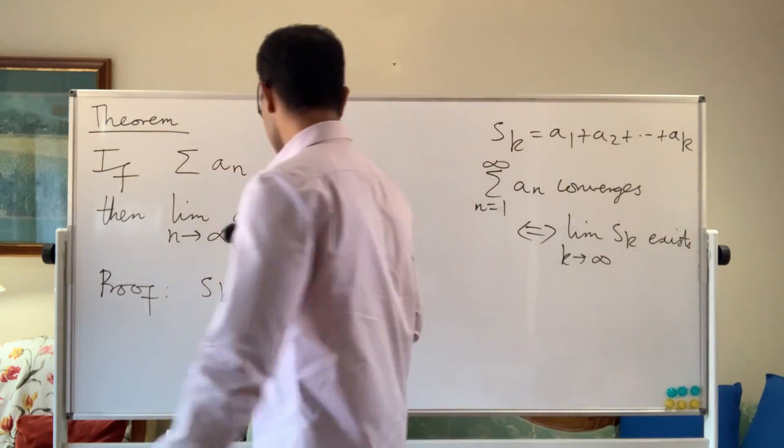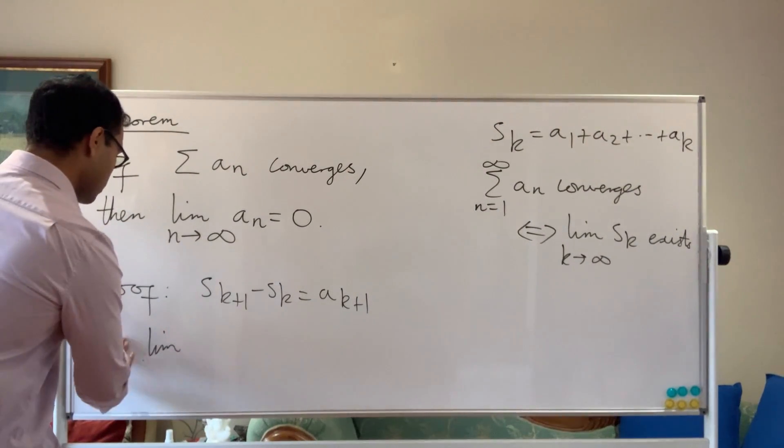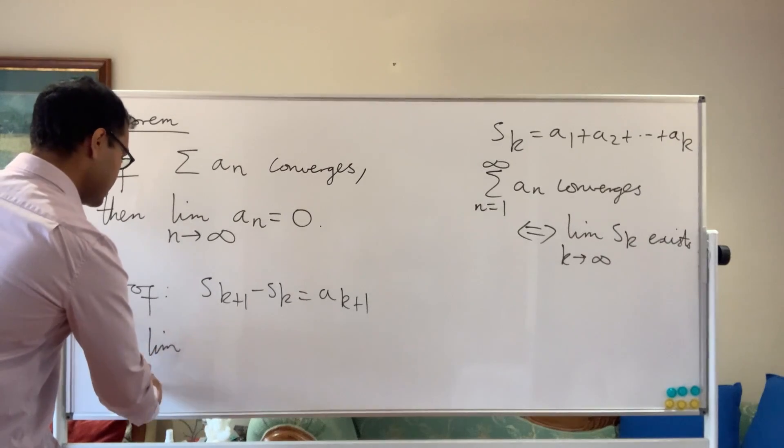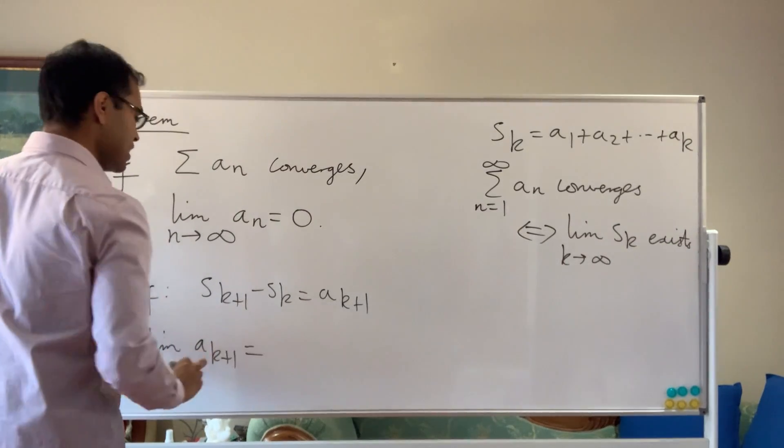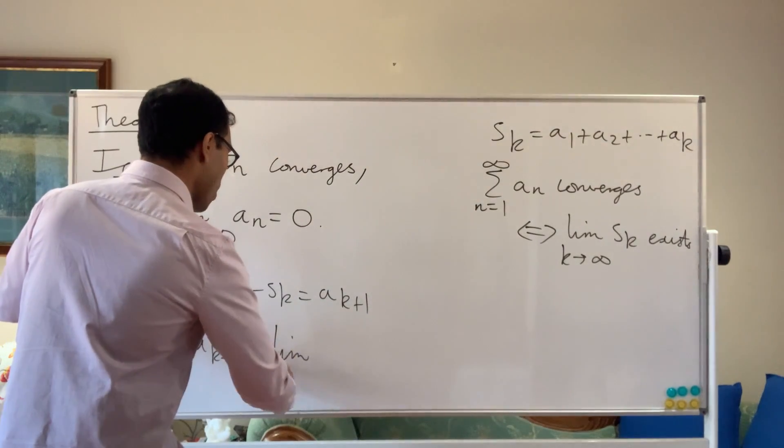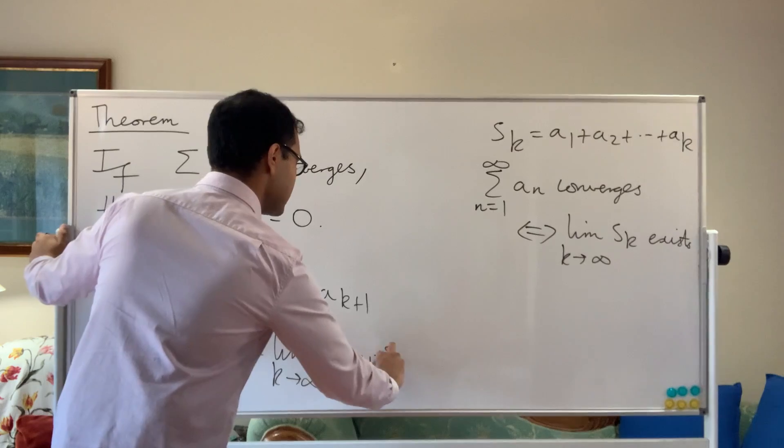Now, what we do is, we know that therefore, the limit as, so here I'm just going to write, the limit as k goes to infinity of a_{k+1} is just going to equal to the limit as k goes to infinity of the difference. Okay, the difference of S_{k+1} minus S_k.